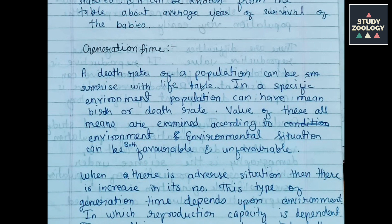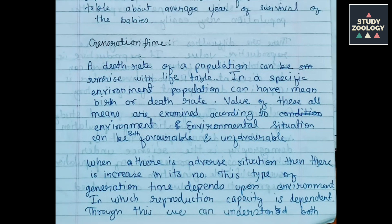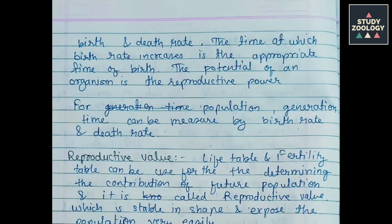Generation Time: A death rate of a population can be summarized with a life table. In a specific environment, population can have mean birth or death rates. The values of these means are examined according to environment, which can be both favorable and unfavorable. When there is an adverse situation, there is an increase in numbers. Generation time depends upon the environment in which reproductive capacity is dependent. Through this, we can understand both birth and death rate. The time at which birth rate increases is the appropriate time of birth, and the potential of an organism is its reproductive power. For a population, generation time can be measured by birth rate and death rate.